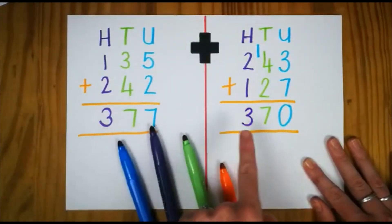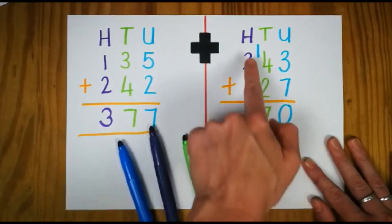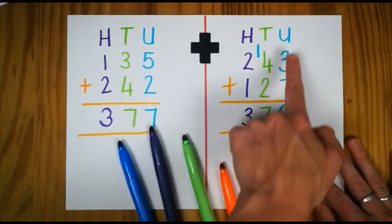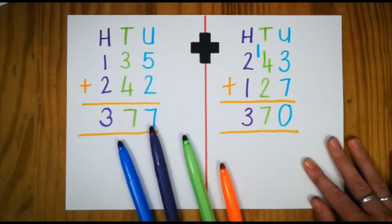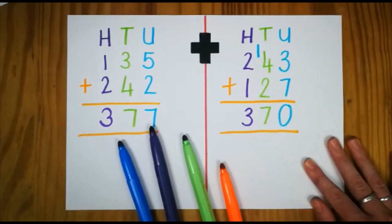And there's our answer. 370. We have 3 hundreds, 7 tens and 0 units. So remember, if you don't have enough, always be kind and give some to your neighbour. Good job with your maths today.